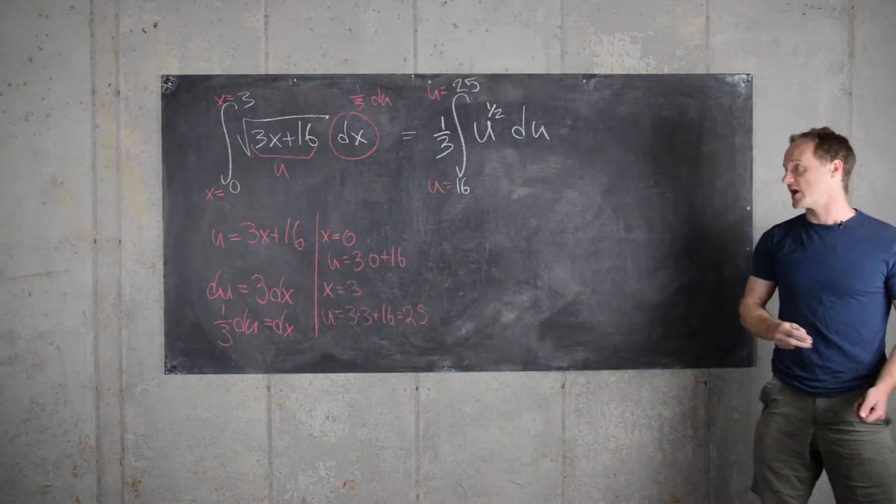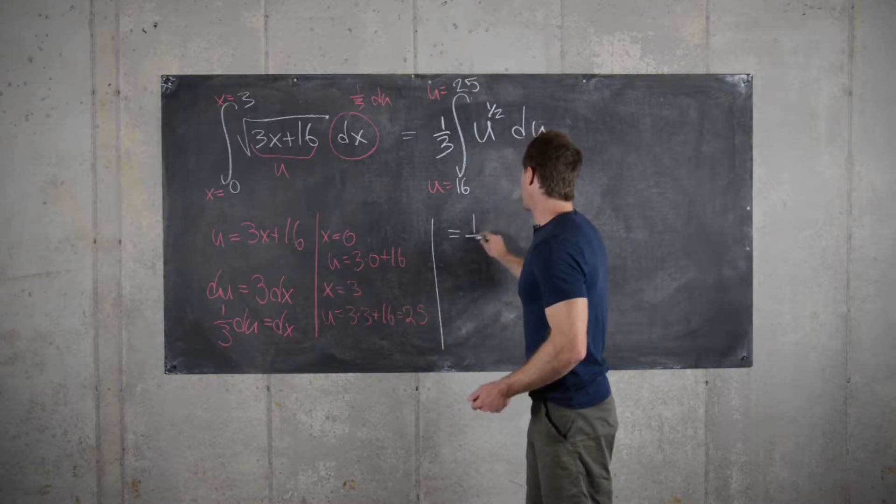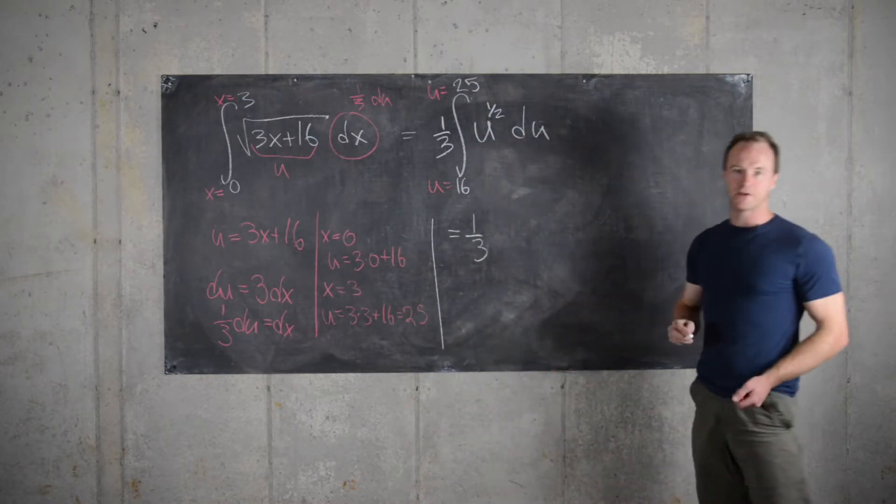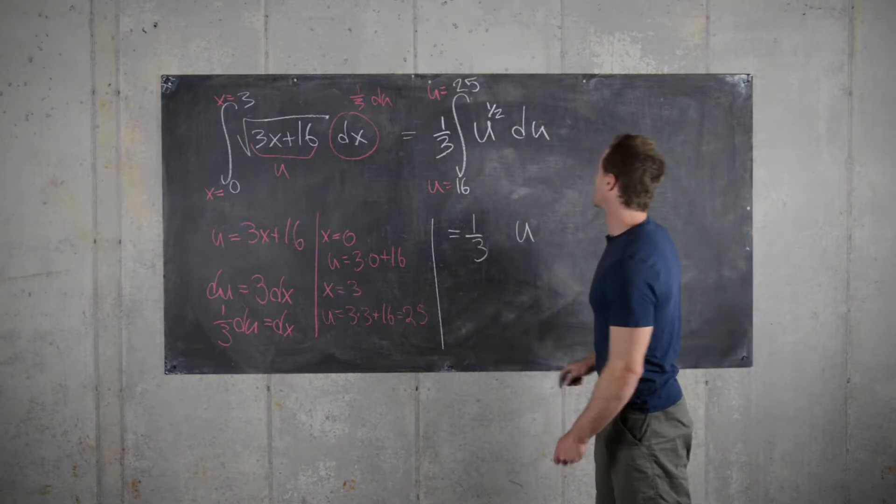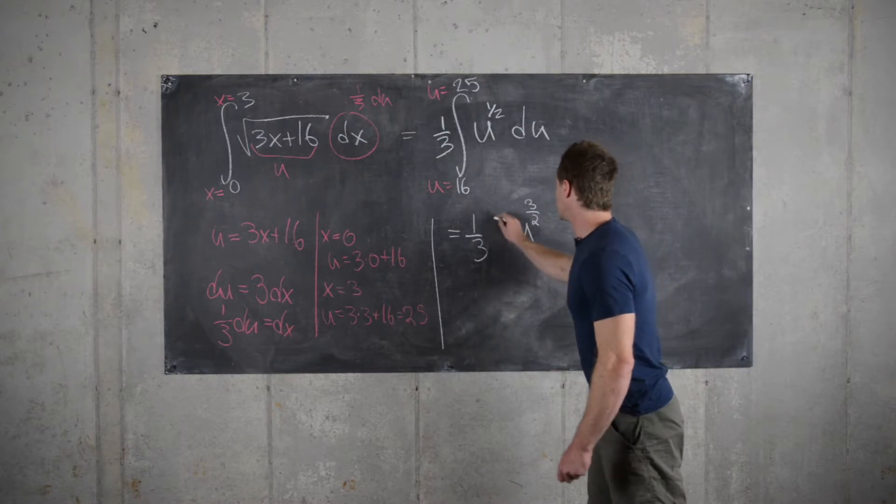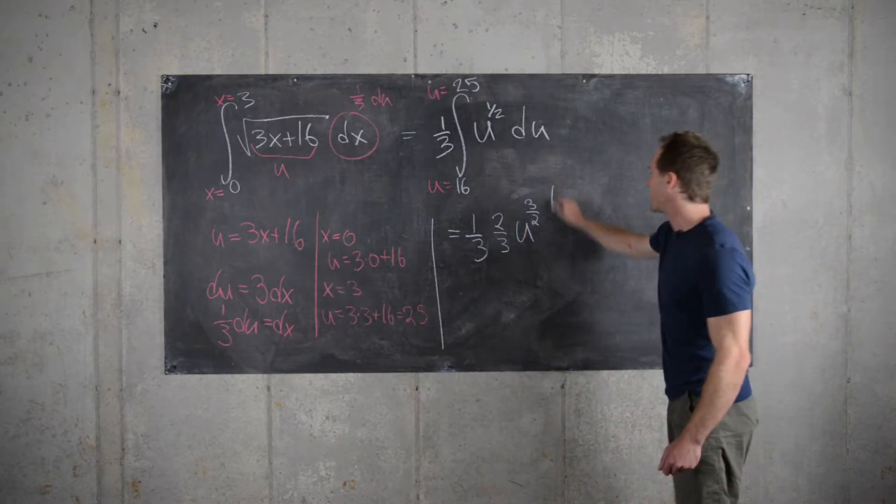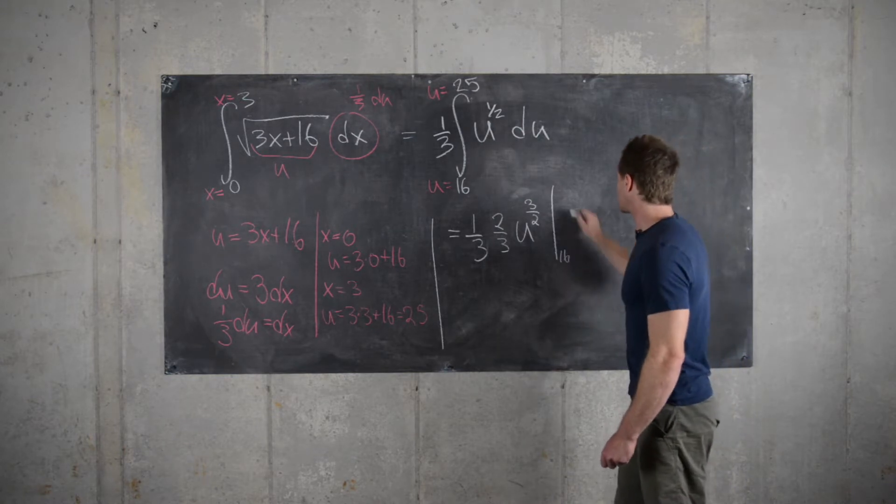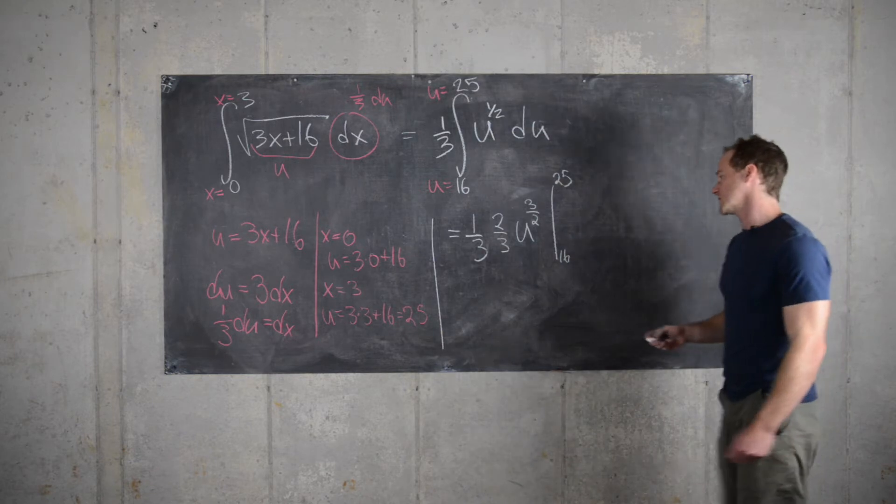Now we can continue on. We get one-third, taking the anti-derivative. We increase the exponent by one and multiply by the reciprocal of the new exponent. That'll give us u to the three-halves times two-thirds. Now we can evaluate that from u equals 16 to 25.